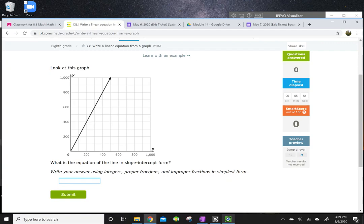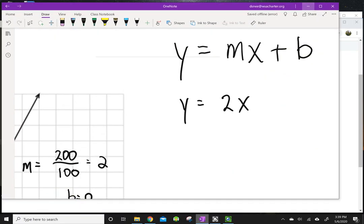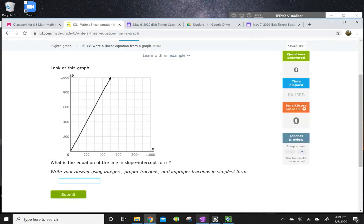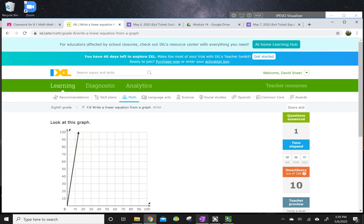So, then I just type it in here. It says, write your answer using integers, proper fractions, and improper fractions in simplest form. So, we need to reduce any fractions. There are no fractions in our answer this time. So, let me look one more time. Y equals 2x. And there we go. That's the equation of that line.